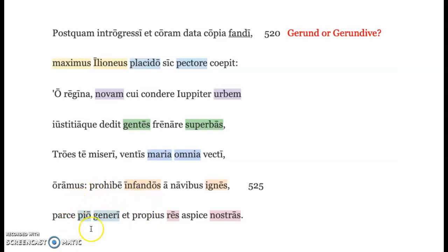Pius genus, look at them as that. Do not look at them as pirates or anything that they're not. Look more closely. Notice here, parce, spare the pious race. Parce takes a dative direct object as you can see right here with pio generi, dative.